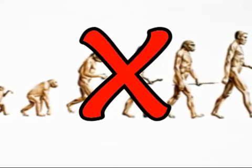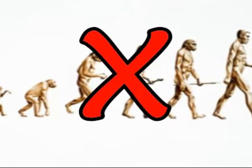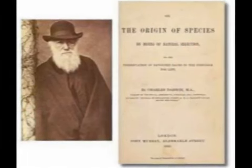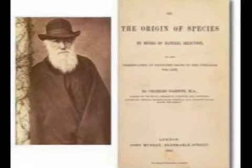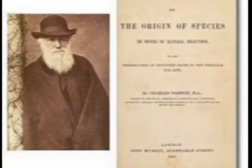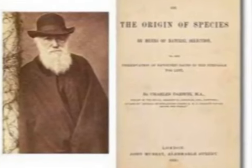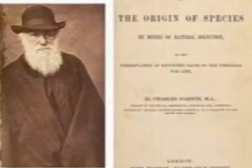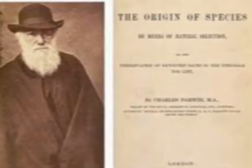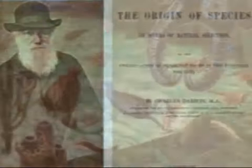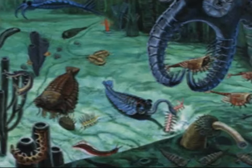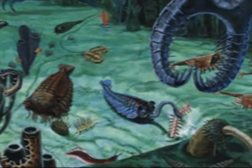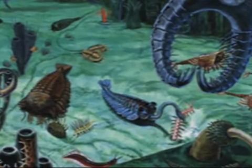Darwin wrote in the Origin of Species: "If numerous species belonging to the same genera or families have really started into life all at once, the fact would be fatal to the theory of descent with slow modification through natural selection." This fatal stroke that frightened Darwin comes from the Cambrian period, right at the outset of the fossil record.